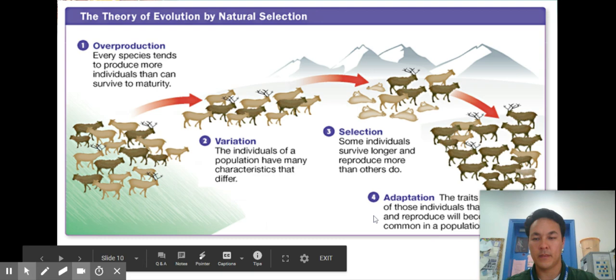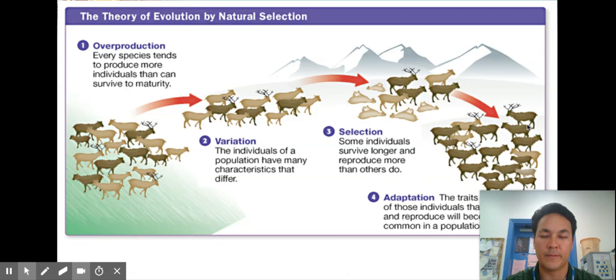So from one finch or one species of finch emerged other species on different islands as they adapted to their environments. All right so let's go over to theory of evolution by natural selection. There's going to be every species tends to produce more individuals than can survive to maturity. There's some type of variation within them the traits that help them have the highest fitness in that environment are the ones that are selected for and that adaptation then persists in the environment.